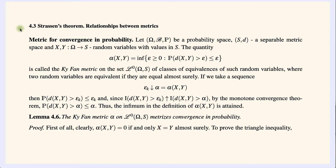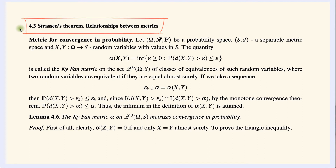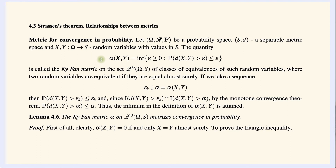In Section 4.3 we prove Strassen's theorem, and as one of its consequences we prove precise inequalities between the Bounded Lipschitz and Lévy-Prokhorov metrics. We start by considering two random variables X and Y defined on the same probability space taking values in the same metric space S, and define what is called the Ky Fan distance between them, denoted alpha. Basically, if alpha is less than epsilon, then the distance between X and Y is less than epsilon except maybe on a set of measure epsilon — so this quantity tells us how close the two random variables are typically.